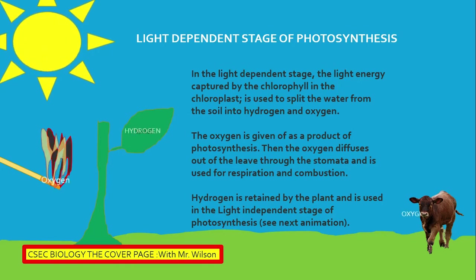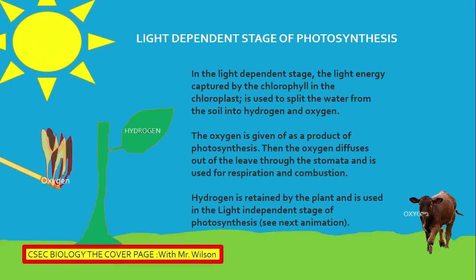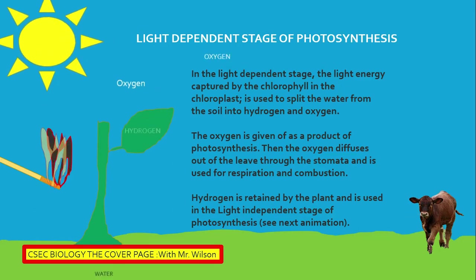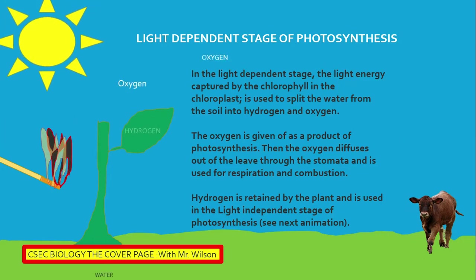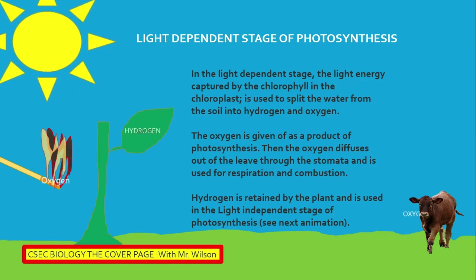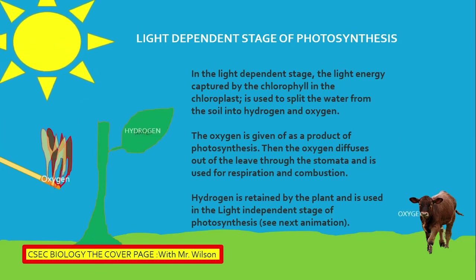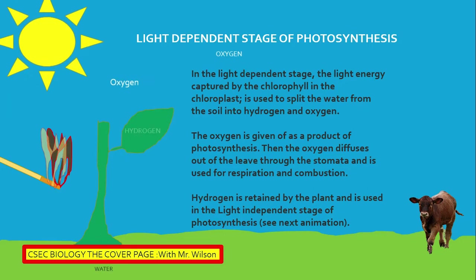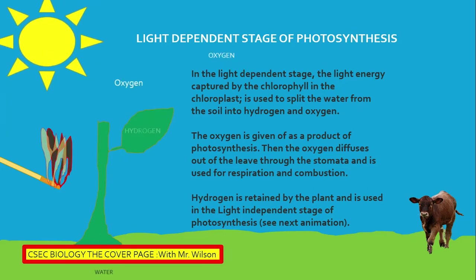Let's look at the animation. In the animation, a water molecule comes from the soil to the chief photosynthetic organ of a plant, which is of course the leaf. The water molecule is split by the light energy from the sun, and oxygen is given off to the atmosphere.